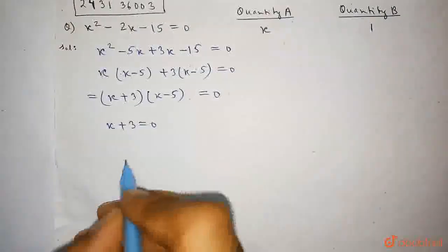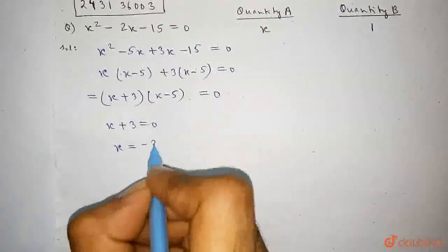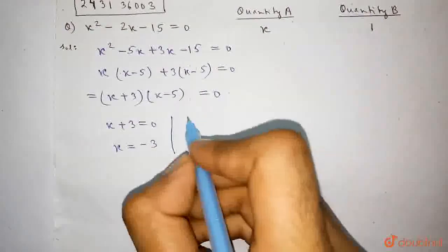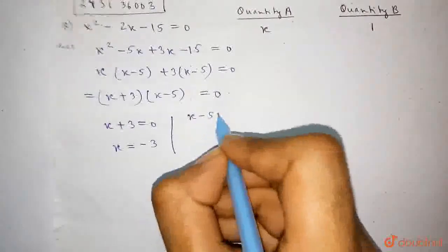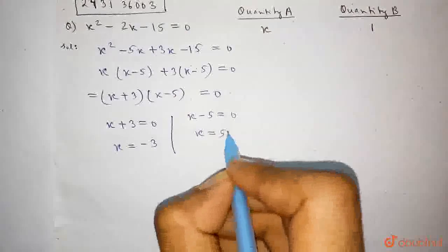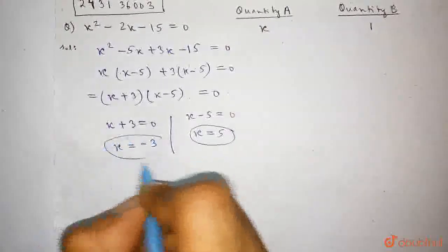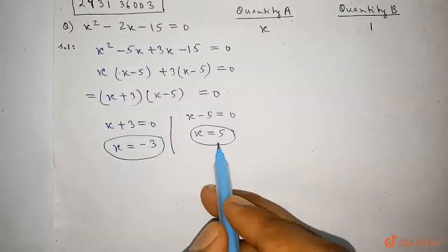Either x plus 3 equals 0, from there we get the value of x as minus 3, and it may be that x minus 5 equals 0, from there we get the value of x as 5. We get two values of x: one is minus 3 and another is plus 5.